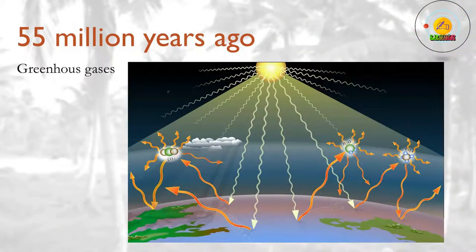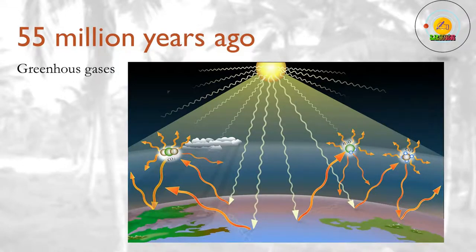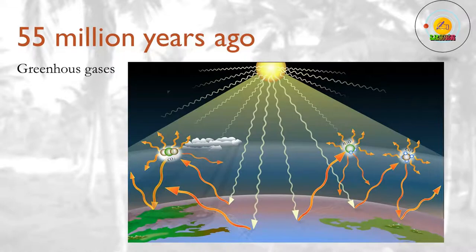55 million years ago. The Paleocene-Eocene extinction. A sudden rise in greenhouse gases sends temperatures soaring and transforms the planet, wiping out many species in the depths of the sea, though sparing species in shallow seas and on land.